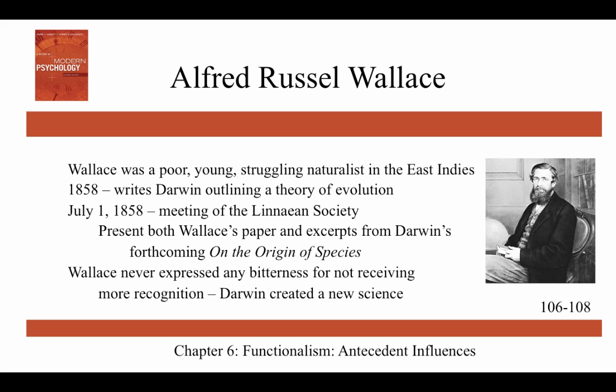Darwin was hesitant to publish until he received a letter from Alfred Russell Wallace. Wallace was a poor, young, struggling naturalist working in the East Indies, and in 1858 he wrote Darwin outlining a theory of evolution that was essentially Darwin's theory — conceived while recovering from malaria, the whole idea coming to him in three days. Wallace wrote to Darwin asking for his opinion and help getting his theory published. The effect on Darwin of receiving Wallace's letter was, in Darwin's words, almost paralyzing. Darwin told his friend Lyell that helping Wallace would forfeit Darwin's credit for originating evolutionary theory, and he wasn't sure what to do.